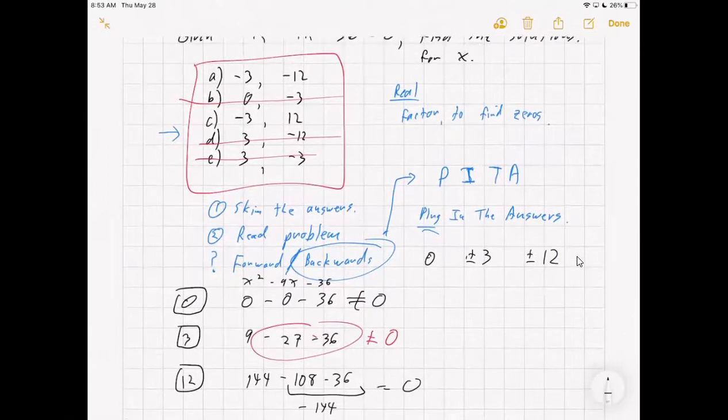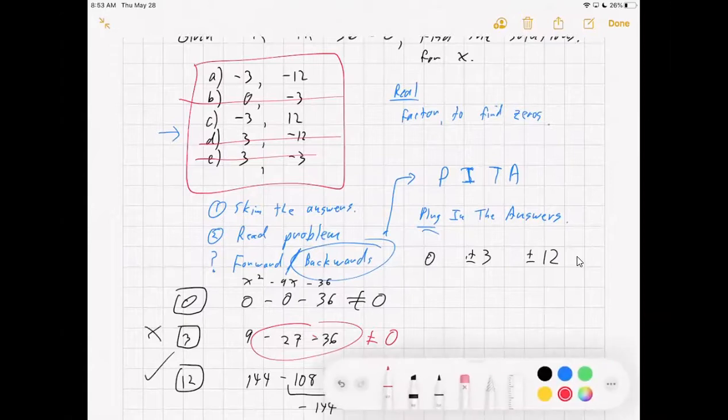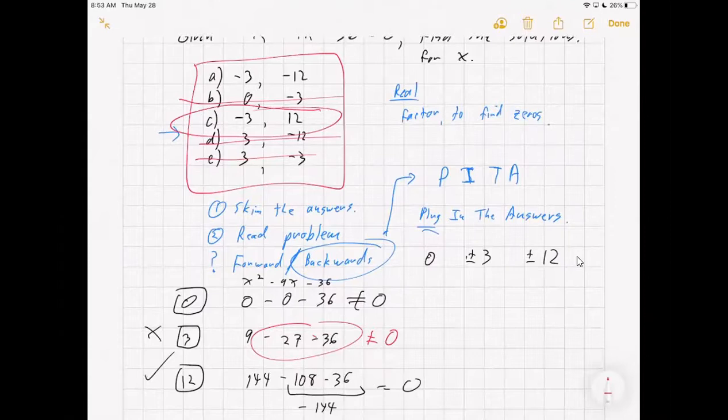So I don't need to check negative 12 now. So see, I only had to check three of the answers to get down to the fact that 12 is an answer. Three is not an answer, so what I want to pick is C. So I could probably, if I weren't talking my way through this, I could plug in those answers that I just plugged in, probably in about 10 seconds apiece, and answer this problem in 30 seconds.